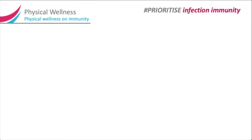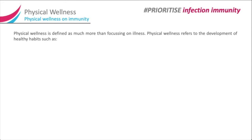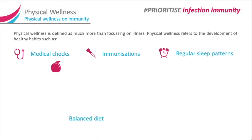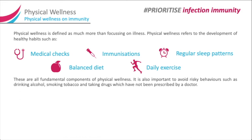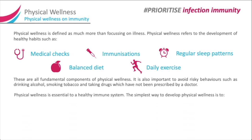Physical wellness on immunity. Physical wellness is defined as much more than focusing on illness. Physical wellness refers to the development of healthy habits such as medical checks, immunizations, regular sleep patterns, balanced diet, and daily exercise. These are all fundamental components of physical wellness. It is also important to avoid risky behaviours such as drinking alcohol, smoking tobacco, and taking drugs which have not been prescribed by a doctor. Physical wellness is essential to a healthy immune system.